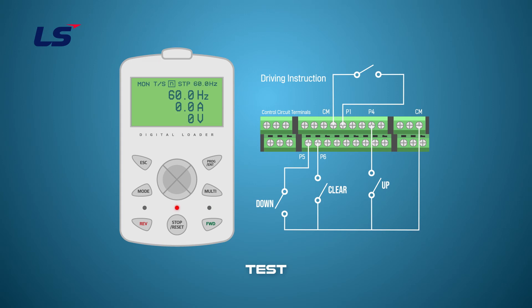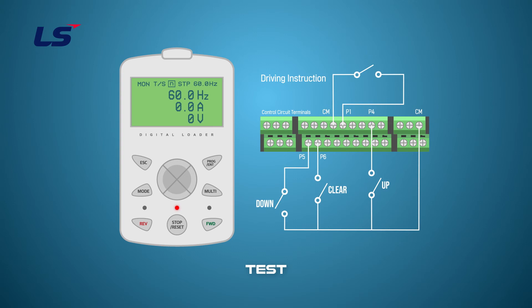After turning the Up off, turn on the FX again to check if the frequency is stored. You can see that the drive is accelerating to 60 Hz even when the Up operation is not turned on. To delete the stored frequency, turn on and off the digital input programmed to clear Up and Down. Then turn on the FX digital input again and check if the saved frequency has been deleted. You can see that it does not accelerate at 0 Hz.